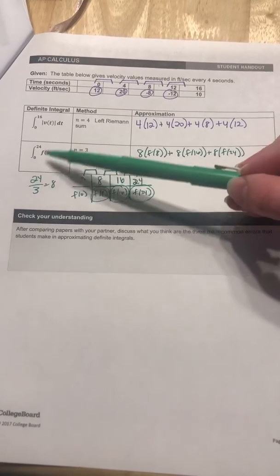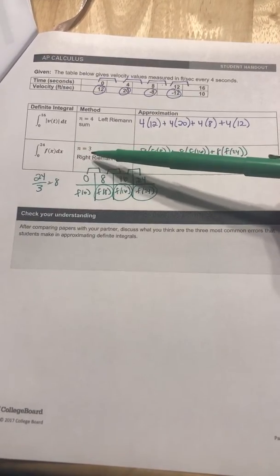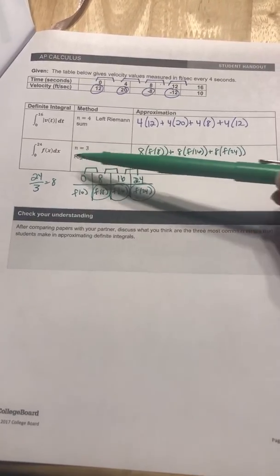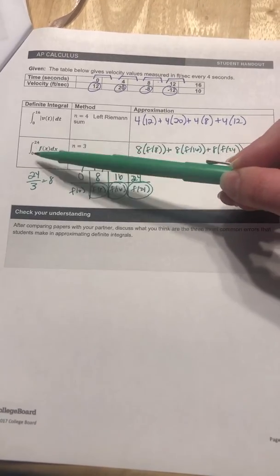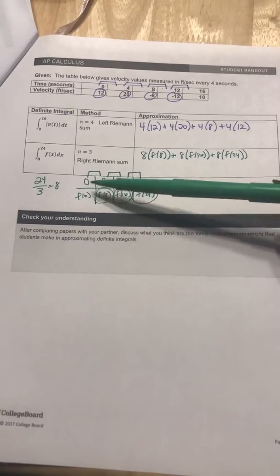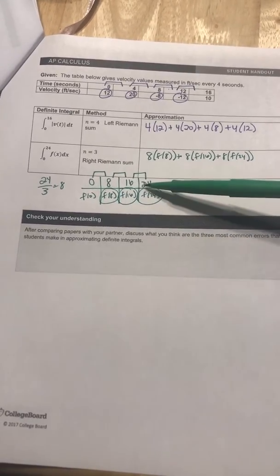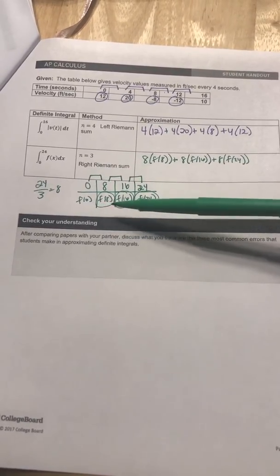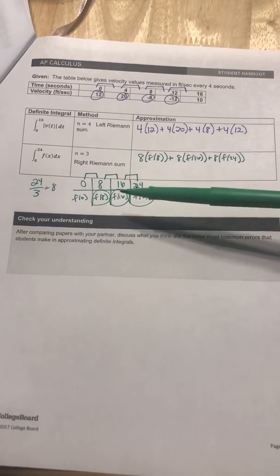Down here, they're saying go from 0 to 24 of f(x), and they want three subintervals, and it's a right Riemann sum. So what I do is: 0 to 24 divided by 3 would be 8. So each interval is going to be 8 wide. And we don't know what the function is, so you just have to say f(0), f(8), etc.